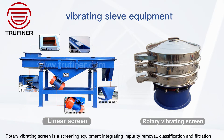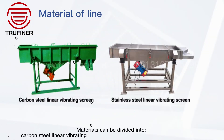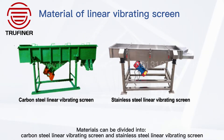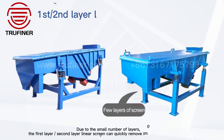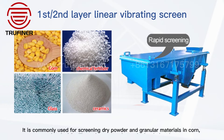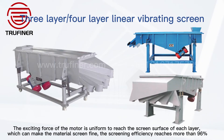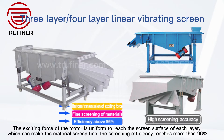Rotary Vibrating Screen is a screening equipment integrating impurity removal. Materials can be divided into carbon steel and stainless steel. Due to the small number of layers, the first and second layer linear screen can quickly remove impurities from materials. It is commonly used for screening dry powder and granular materials in corn, chemical fertilizer, glass, ceramics and other industries. The exciting force of the motor is uniform to reach the screen surface of each layer, which can make the material screen fine. The screening efficiency reaches more than 96%.